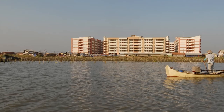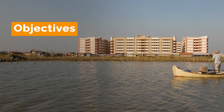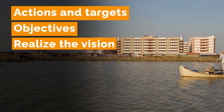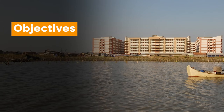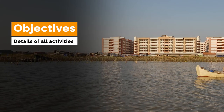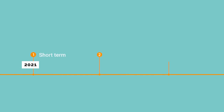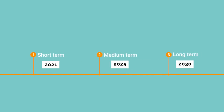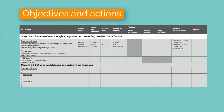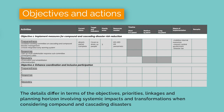It is also important that communities have a complete understanding of the actions and targets to achieve objectives and realize the vision. Under each objective, communities need to explain details of all activities highlighting the state, targets, indicators, relevant priorities, and outcomes. This also includes a timeline — short, medium, and long-term — based on priorities, required resources, and available means of implementation. While the action plan might resemble existing disaster management plans, the details differ in terms of objectives, priorities, linkages, and planning horizon involving systemic impacts and transformations when considering compound and cascading disasters.